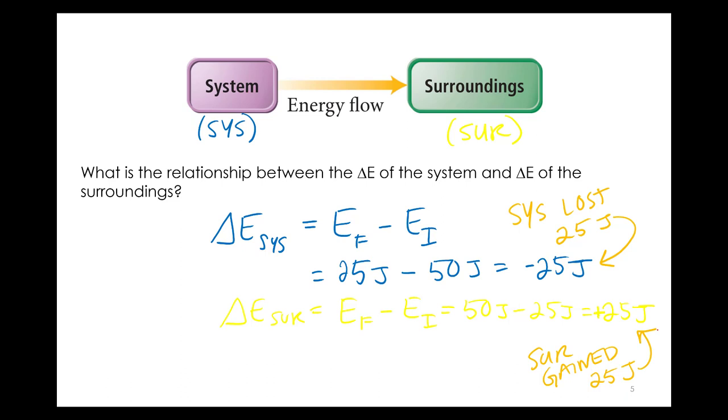So the relationship between the system and surroundings is that they are going to gain or lose the same exact value. Numerically equal. But one's always gaining, so one's always losing. So they're always going to be opposite in sign. Doesn't matter who loses what. But in this instance, the system lost 25 joules. The surroundings happens to pick it up, but it could have been the other way around. The surroundings could have lost, the system could have gained. And so mathematically, how we would write the relationship is that the change in energy of the system equals the change in energy of the surroundings, but they're opposite in sign.